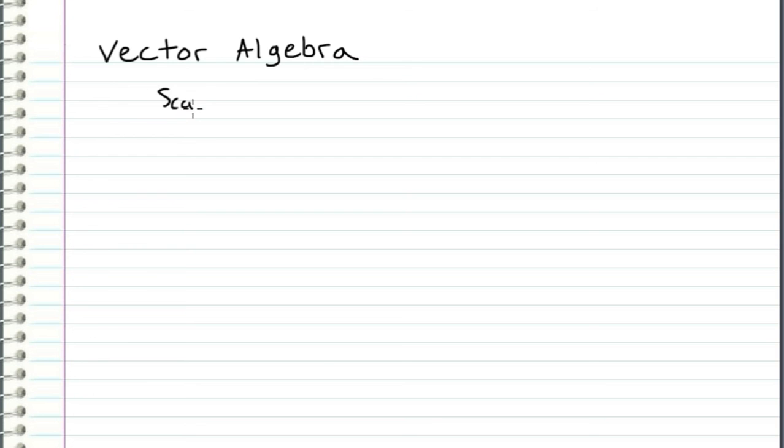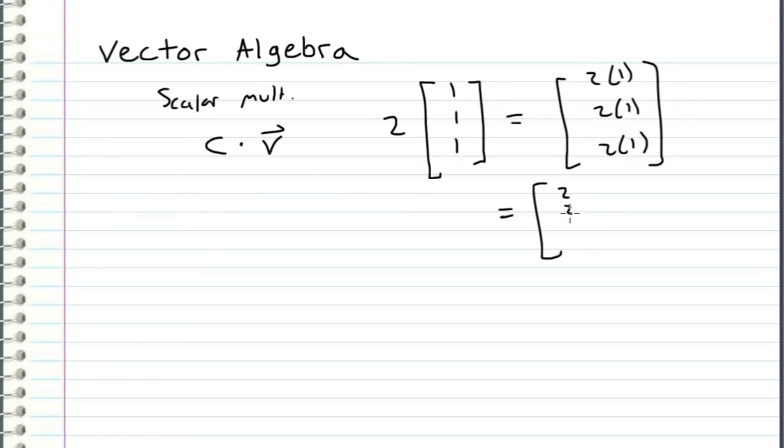All right, so now I want to introduce scalar multiplication with vectors. And all that means is we have a number, and we're multiplying it by a vector. So this can be something like having the number 2 and multiplying it by the vector [1, 1, 1]. And when we perform this operation, all we do is take each component of the vector and apply the multiplication across each component. So for example, 2 times [1, 1, 1] will come out to be [2×1, 2×1, 2×1], which we all know would be [2, 2, 2].